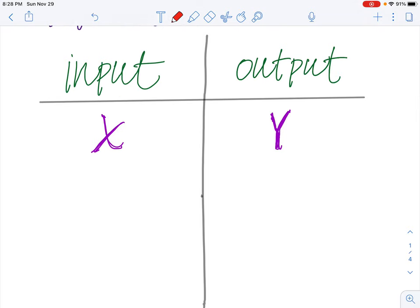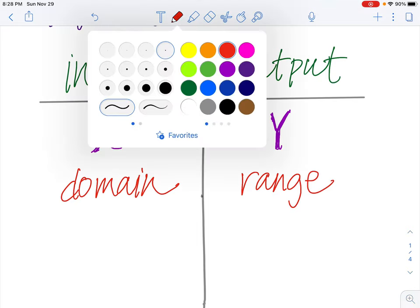Math has specific names for these as well. X is called the domain of the function. If you see domain, that means it's an input value. And the output is called the range of the function. If you see the word range, that means you're looking at the output value.